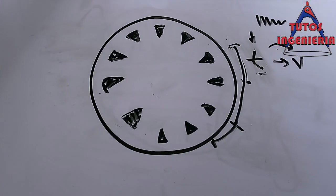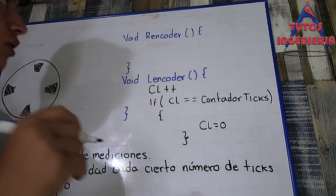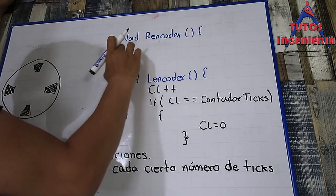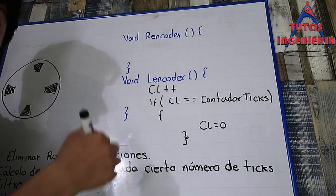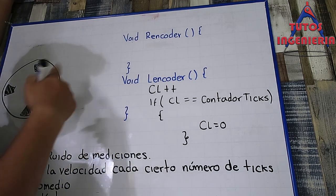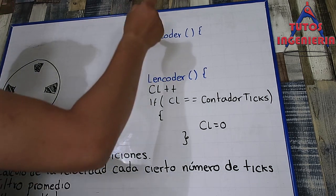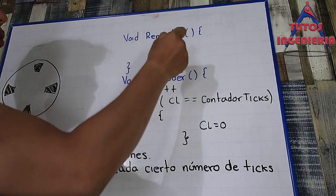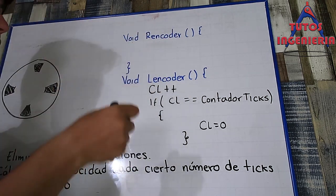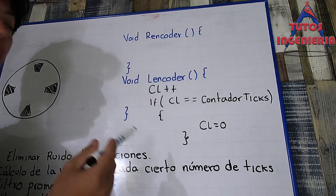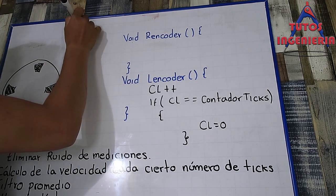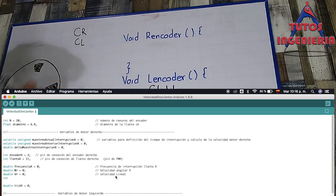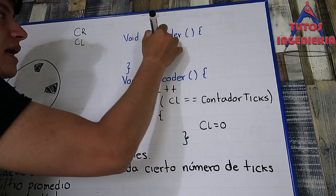The idea behind this filter is to calculate the time not just for one tick, but over more than one tick. In the last video we implemented two functions: the right encoder (r_encoder) and the left encoder (l_encoder). Those functions are activated when the encoder generates a new tick, and inside each function there are calculations such as the time between ticks, the frequency, and the velocity.